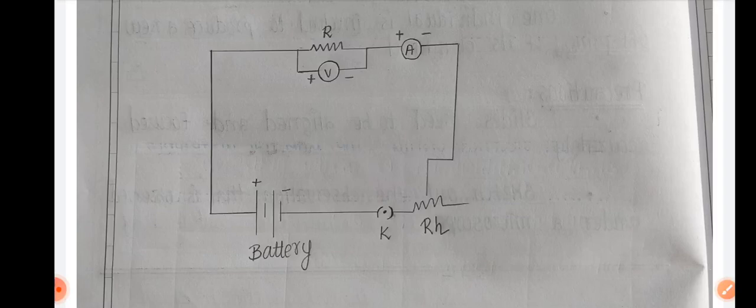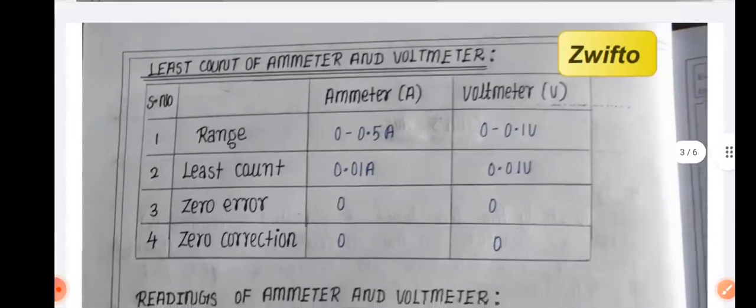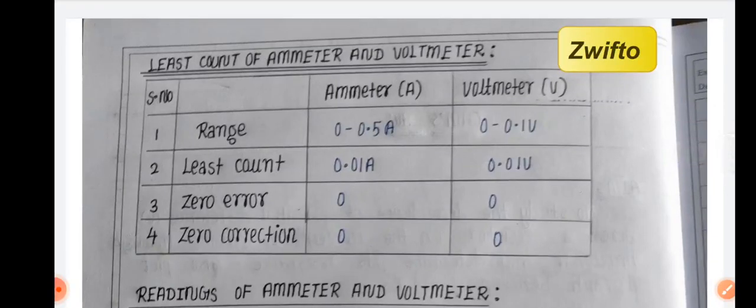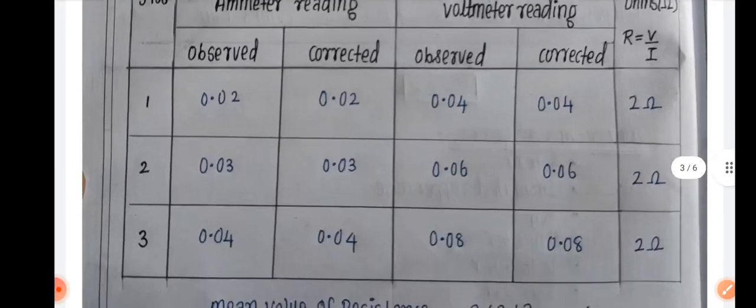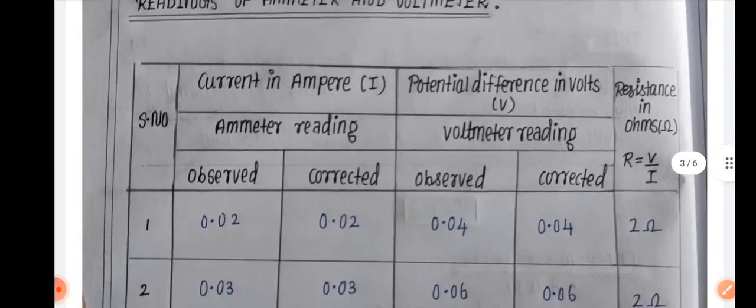What do you do in the graph? You have to plot it. So least count of voltmeter, that is zero error, so you have to correct everything and you have to just tabulate everything. Then I have to see three readings.